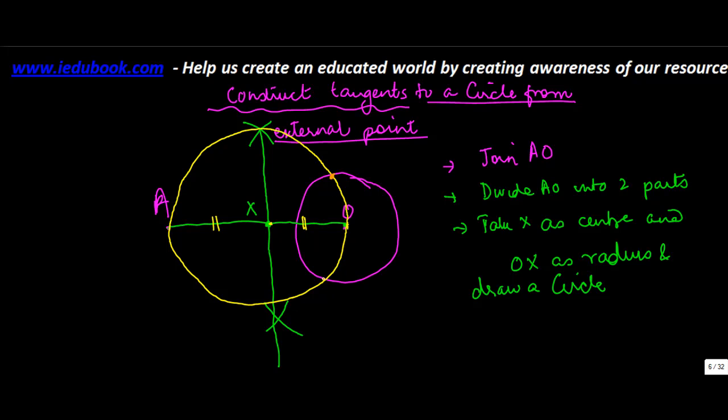Let's call the intersection points P1 and P2. Then you join AP1 and AP2. From here join AP1, from here join AP2.